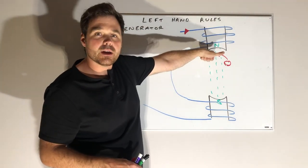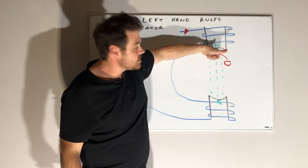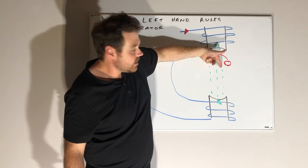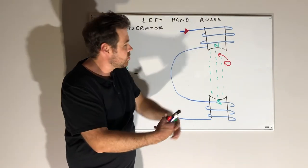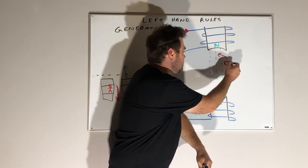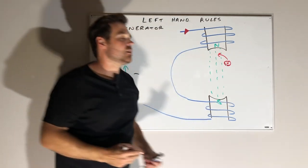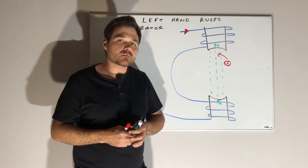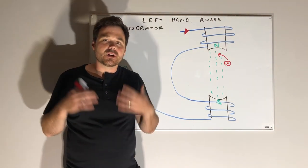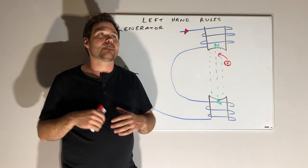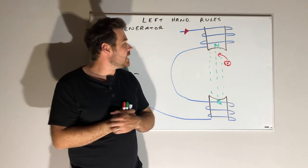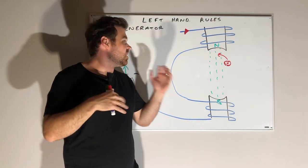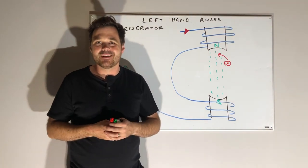So our thumb goes in the direction of relative motion. Our index finger - we know it's north to south - points straight down. And then our middle finger gives us the direction of current, which is coming out of the page towards us. So in this case, we get the arrowhead symbol - current is coming out of the board towards us. So those are our three left-hand rules. We covered a lot really quickly, but these are really important rules as we move forward and explore the electrical theory behind these machines. Thanks for watching.